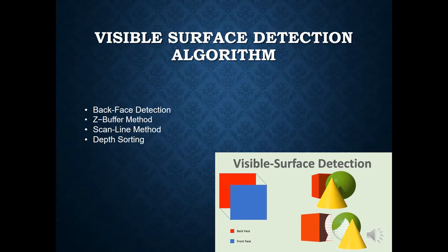In general, there are several visible surface detection algorithms. The ones we are going to cover in this topic are: back-face detection algorithm, Z-buffer method algorithm, scanline method algorithm, and depth sorting algorithm. Let's find out each of these algorithms in the next slides.